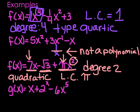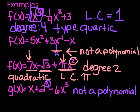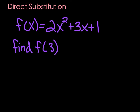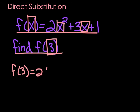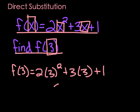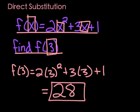The last one: g of x equals x plus 2 to the x power minus 6x to the fifth. There is an x in the exponent, so this does not fall under the definition of polynomials — it is not a polynomial. Now, direct substitution is something you all know how to do. If f of x equals 2x squared plus 3x plus 1, and you want to find f of 3, you plug 3 in for every x and get f of 3 equals 28.